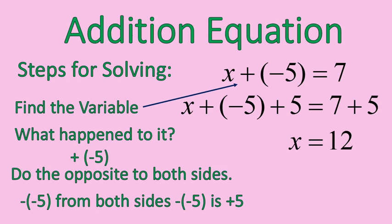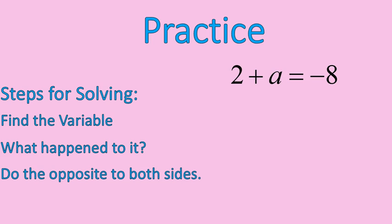Now, if you want to check your work, a great thing to do with positives and negatives is to check your work. Try 12 plus negative 5 and see if you get positive 7 as your result. And you will. 12 plus negative 5, or 12 minus 5, is equal to 7. Let's do some practice. This one here, 2 plus a equals negative 8. Pause the recording. Follow those steps. Try to solve this equation.